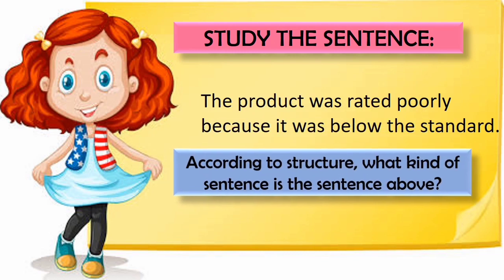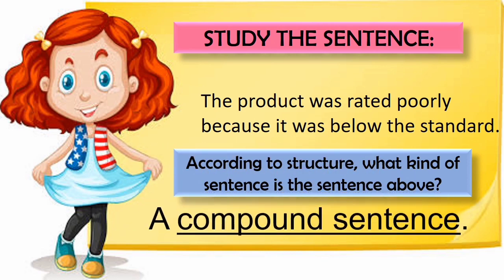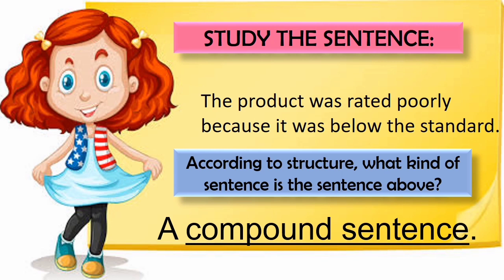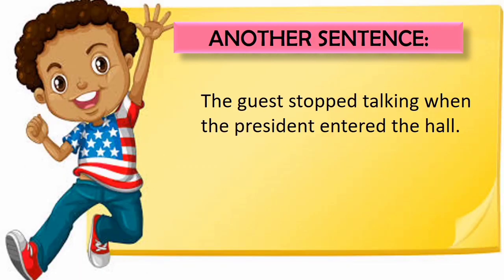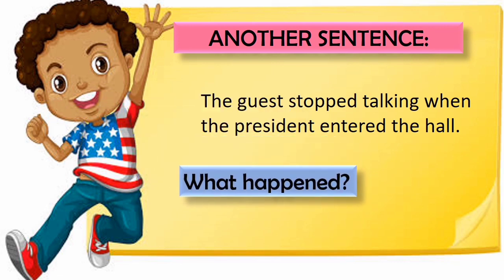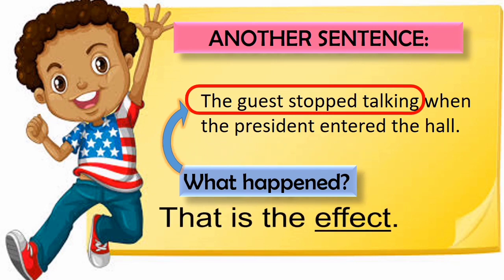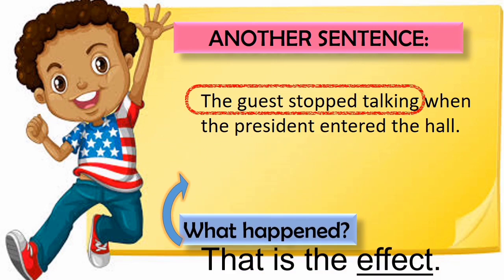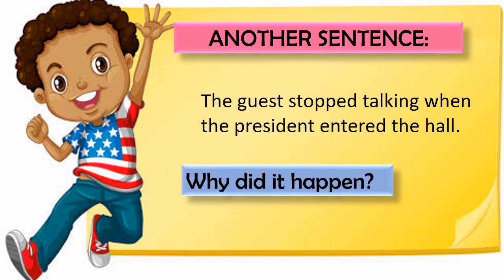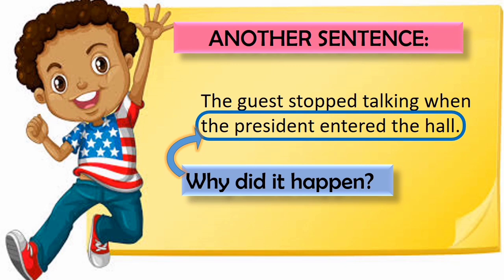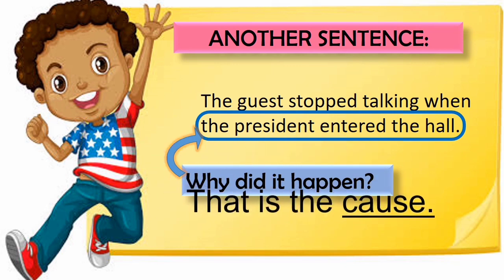According to structure, what kind of sentence is the sentence above? The sentence is an example of a compound sentence. Here is another sentence to study. Let's read it together: The guest stopped talking when the president entered the hall. What happened? The guest stopped talking — that is the effect. Why did it happen? The president entered the hall — that is the cause.